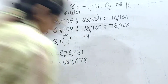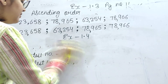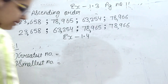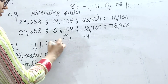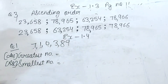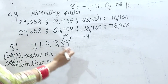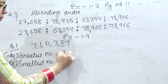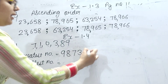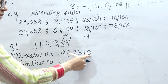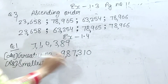Ek aur number deti hoon. Agar yaha pe zero hota hai — yeh aapne class third mein bhi padha hai. Jaise digits hain: 7, 1, 0, 3, 8, 9. Greatest number mein descending order follow hota hai, to sabse bada number: 9, 8, 7, 3, 1, 0. Comma lagayenge: ones, tens, hundreds — comma — thousands, ten thousands — comma — and lakh.